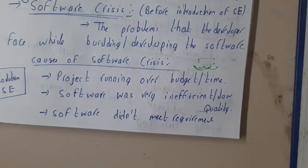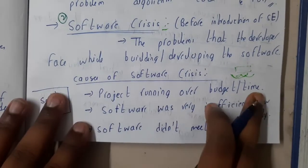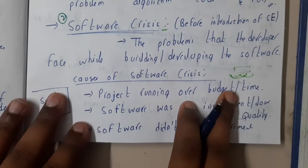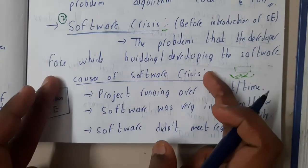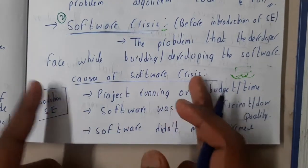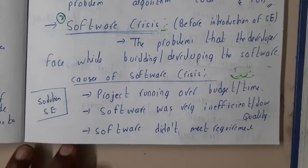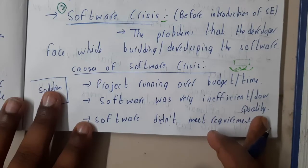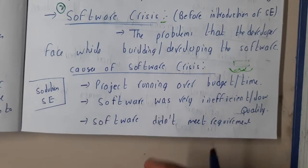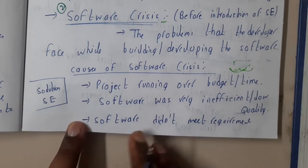Some big projects take one or two years. The budget is also specified, and if the cost increases, your company has to bear it — there will be many agreements. Software was also very inefficient and low quality because they did not use to test, which is why this problem arose.